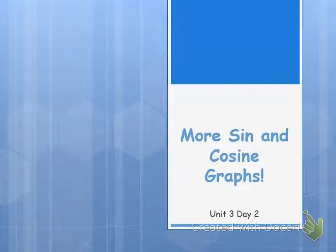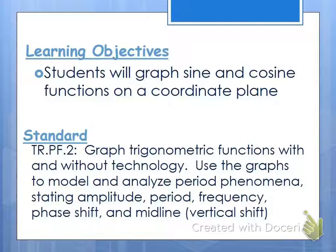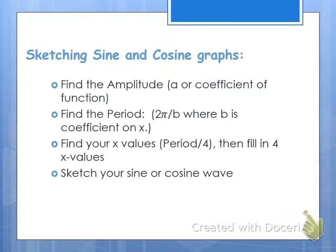Today we're going to take a look at some more sine and cosine graphs. Last time we messed around with the amplitude a little bit. Now we want to talk about what happens when we start messing around with the period of a sine and cosine graph. And so we're going to continue graphing these.